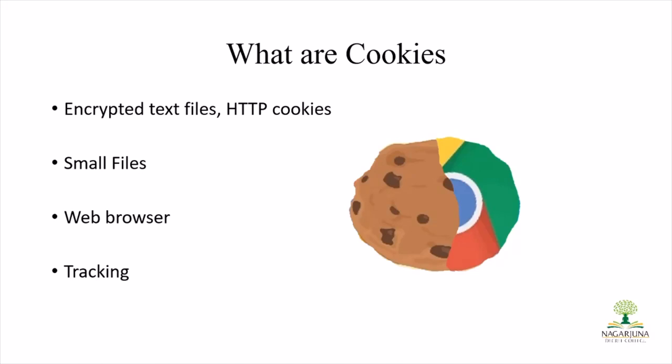When you visit a website for the first time, the website puts a cookie on your hard drive with a unique ID code that the site uses to track all your activity from start to end of each session. Cookies also track items in a shopping cart - when you're using Flipkart or Amazon, the products you prefer or search for can be added to your shopping cart.